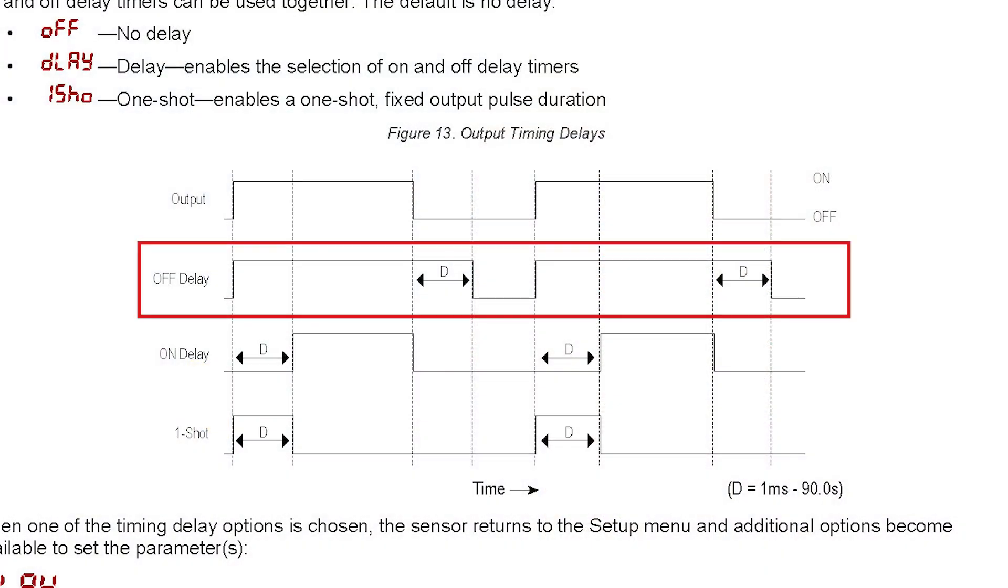Off-delay requires the detection range to be clear of a target for a set amount of time before the output signal will turn off.